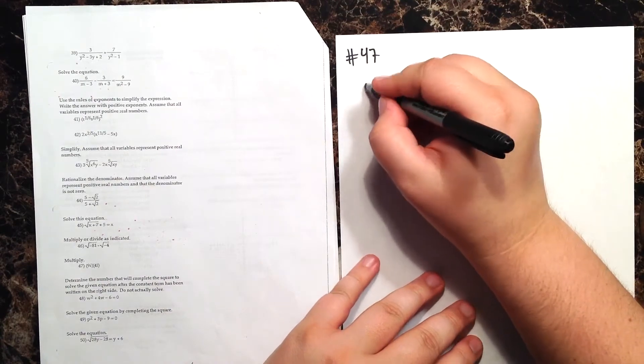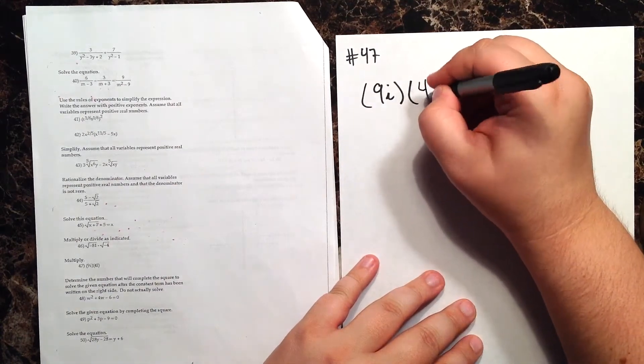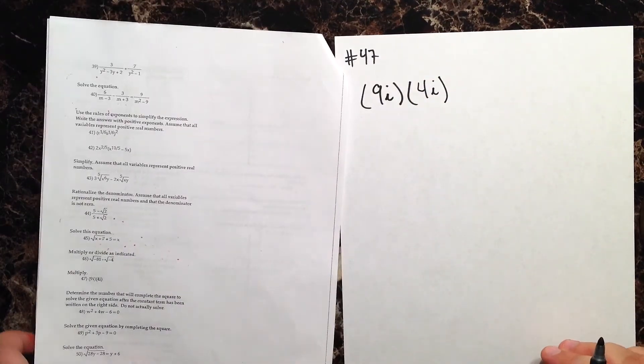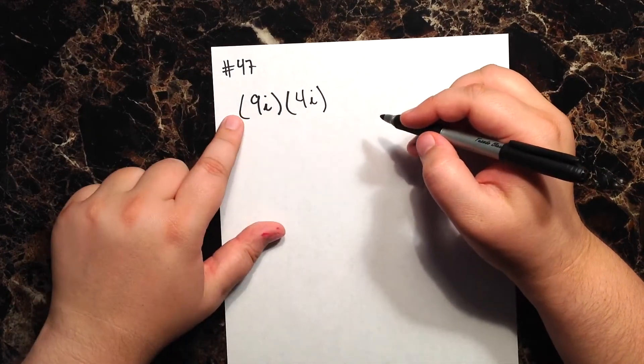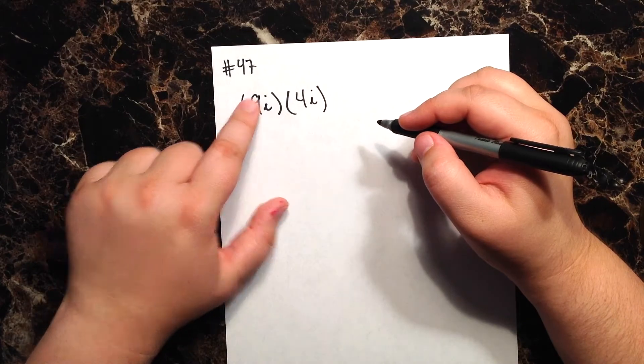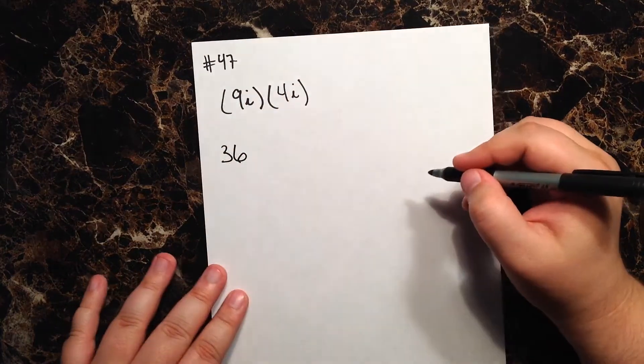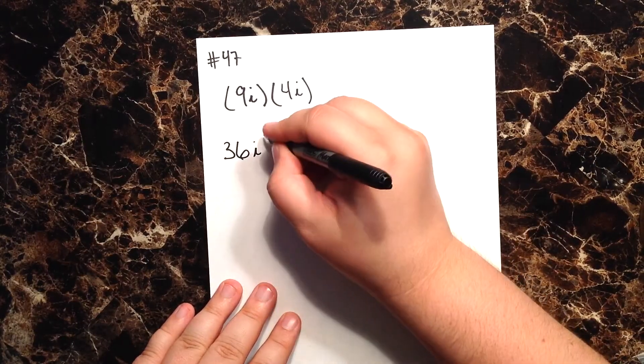Well, they give us 9i times 4i. This is pretty similar to number 46 after we broke down our radicals, isn't it? All right, let's go ahead and just multiply. What is 9 times 4? Well, that gives me 36. What is i times i? That gives me i squared.